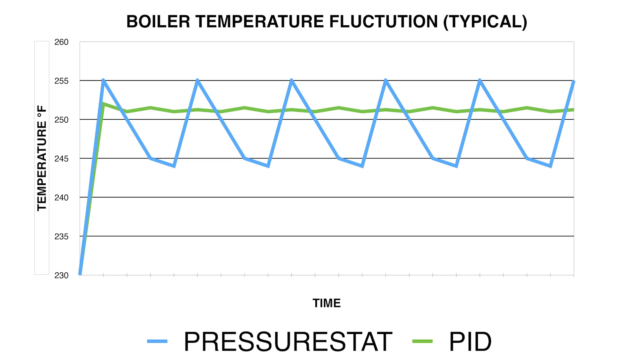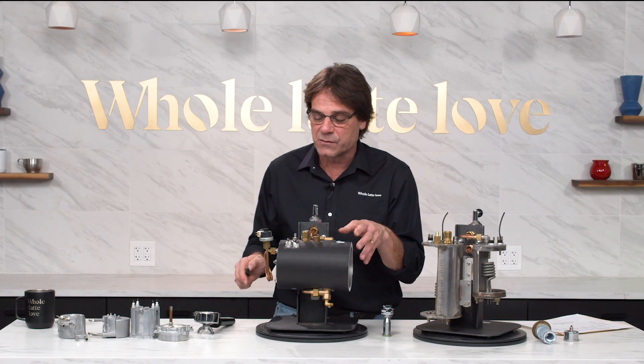Now I want to show you a little graph here. This is what the typical temperature inside a heat exchange boiler controlled by a pressure stat looks like. And you'll see that it rises, then falls, and rises, then falls. We're going to take a look at a PID machine in a second and talk about how they keep an incredibly constant temperature. And you can see that in the graph, the representation of the temperature inside a PID controlled boiler.